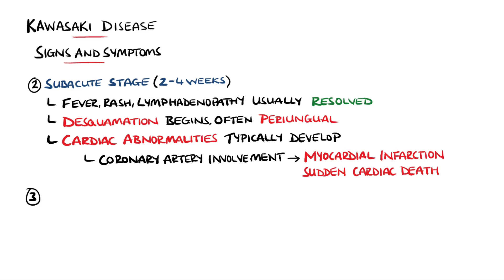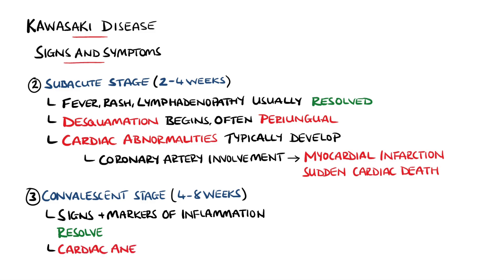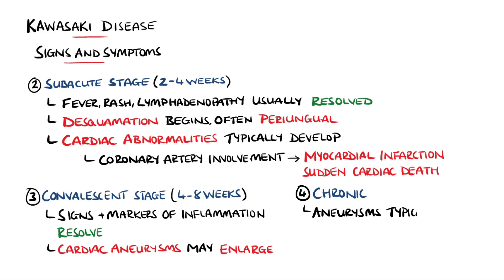The convalescent stage lasts between four and eight weeks, and it is in this period that the signs and symptoms of inflammation recede and the acute phase markers normalize. However, cardiac aneurysms may enlarge during this stage. Chronically, it is possible for the aneurysms to resolve, but in some instances they will persist into adulthood.